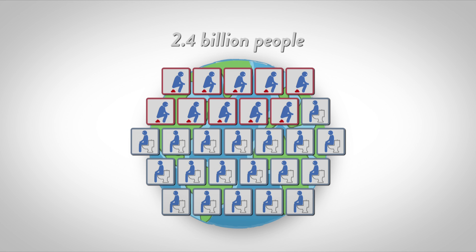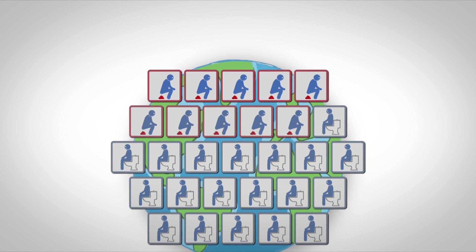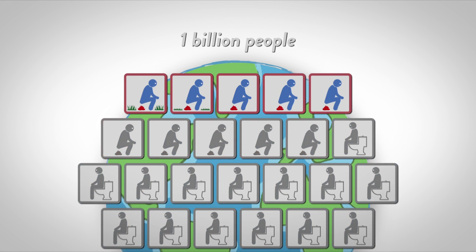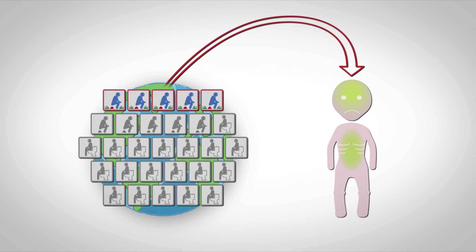One out of three people does not have access to a decent toilet. One billion amongst them practice open defecation. This has a direct impact on undernutrition.